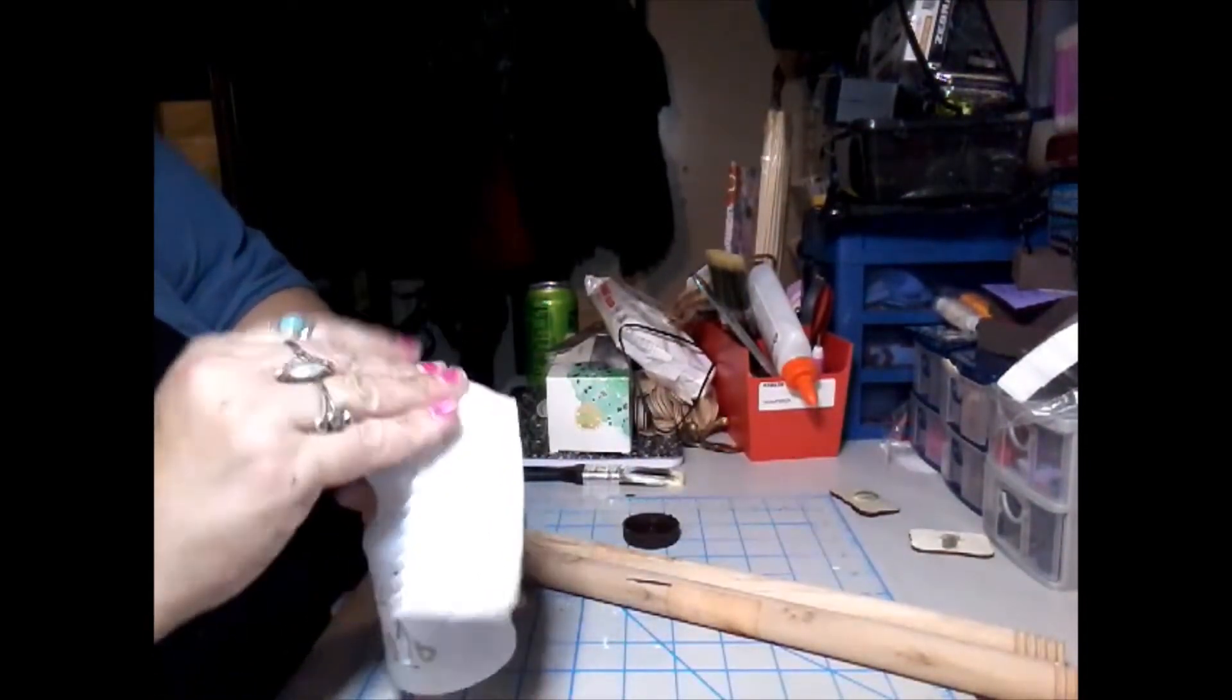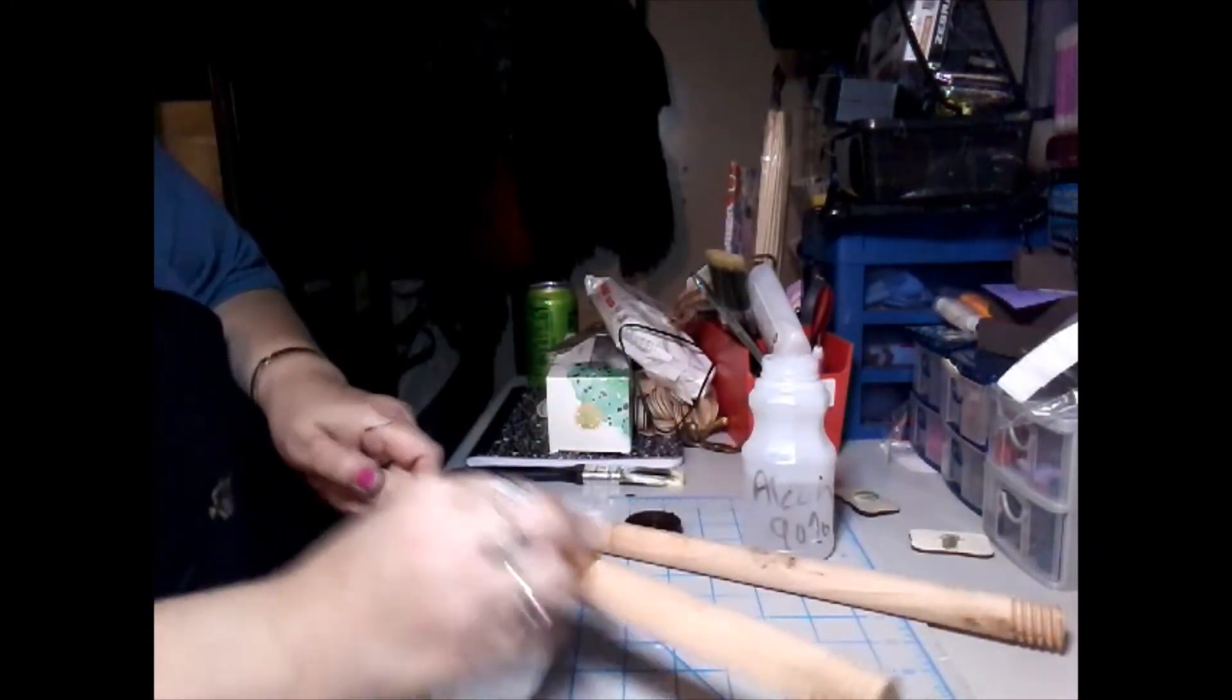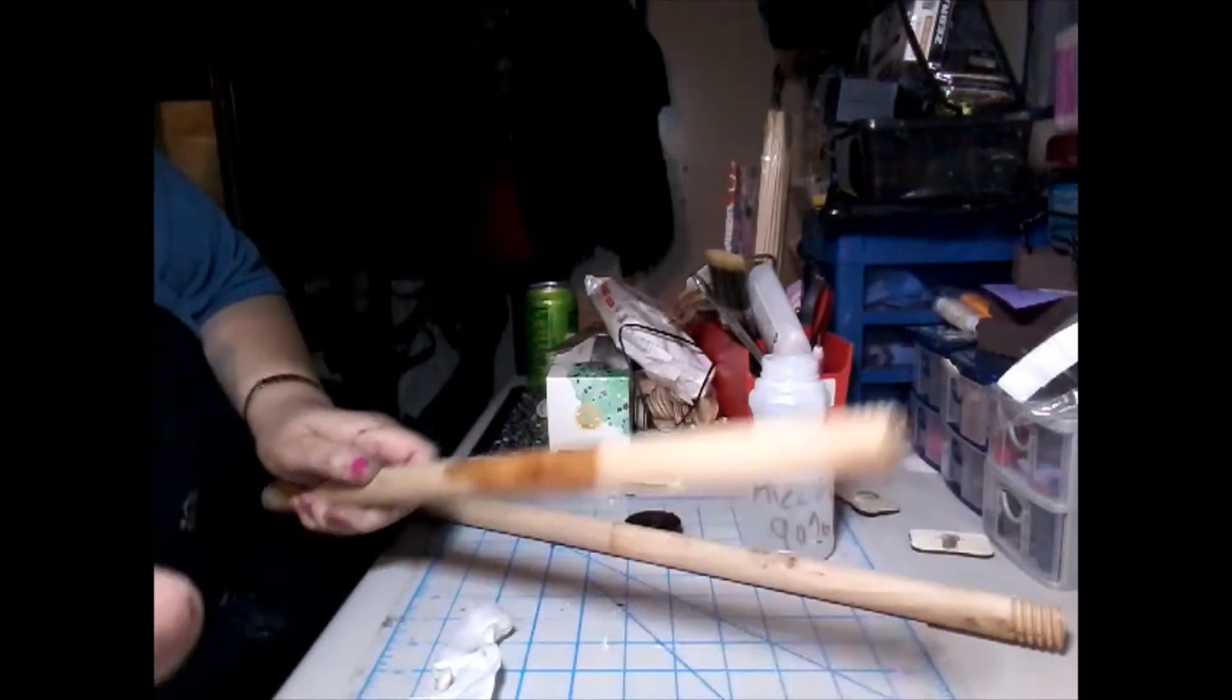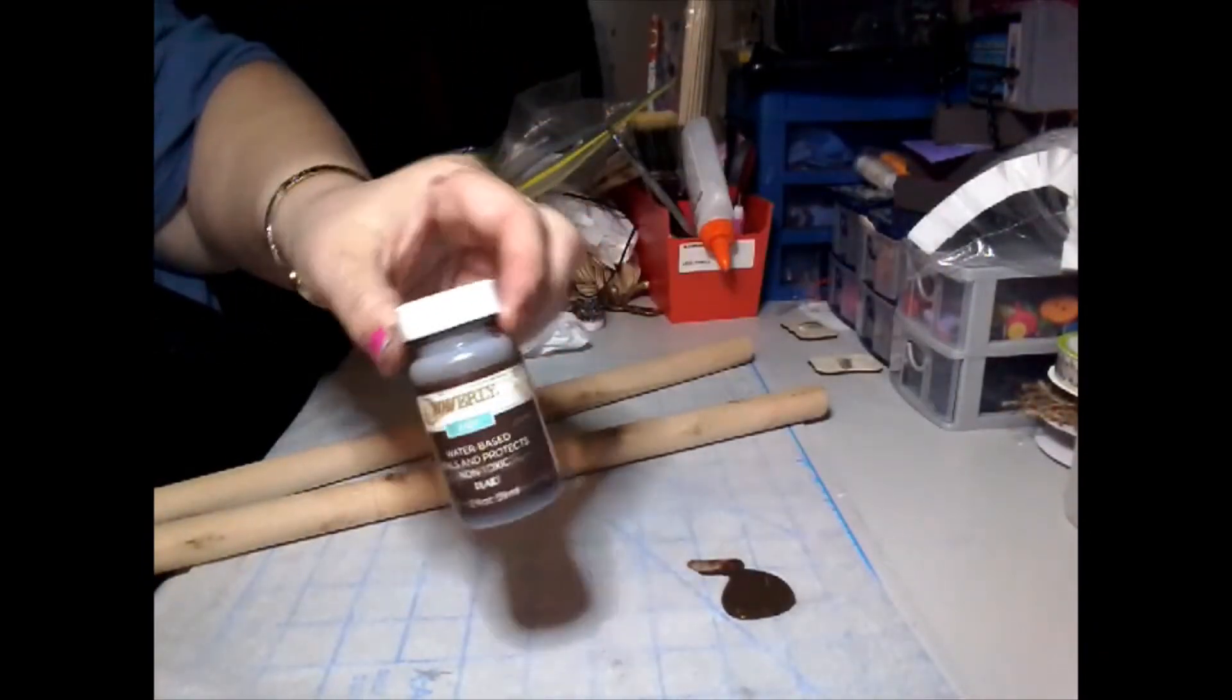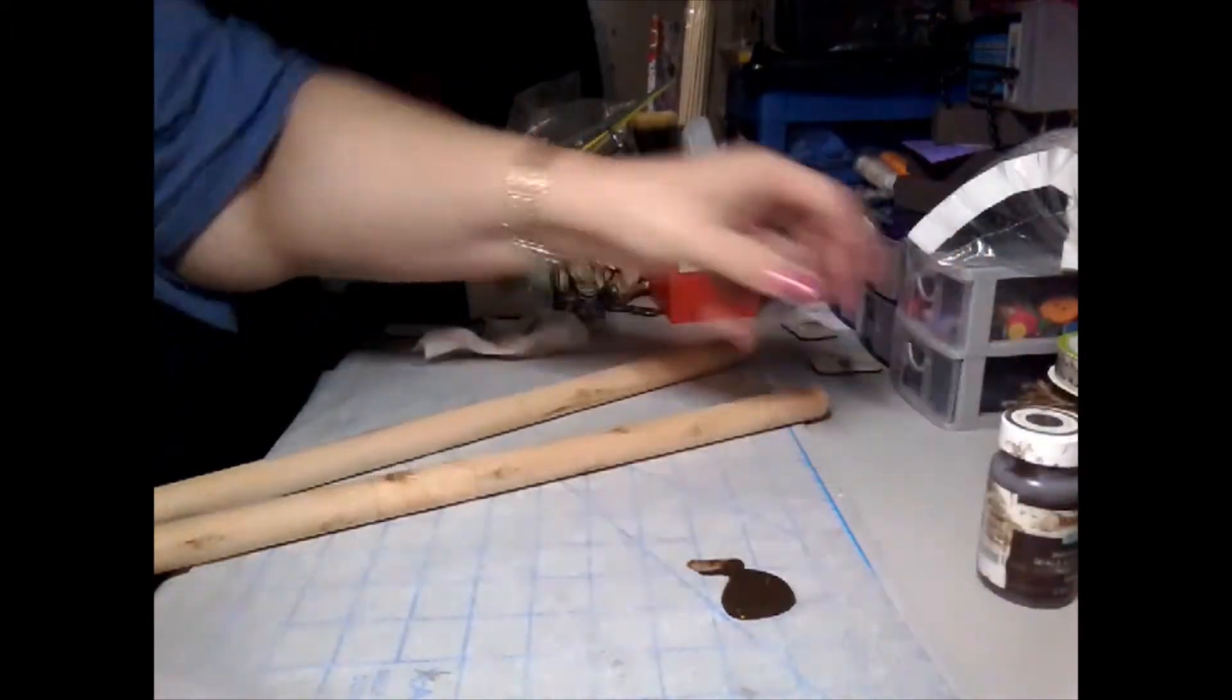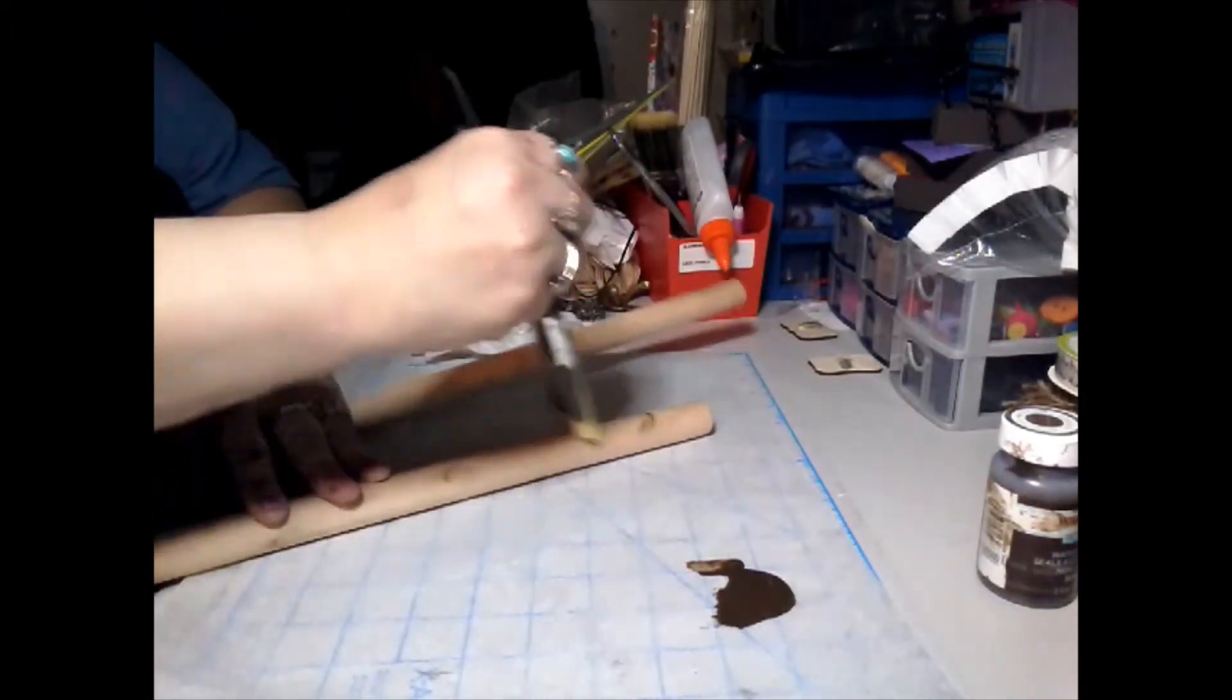I'm going to use some of this alcohol to try to take off some of that sticky that's left behind. After that, I'm going to take some of the Waverly wax in antique color and I'm going to just paint both of these plunger sticks.